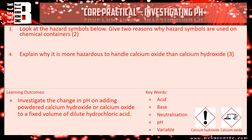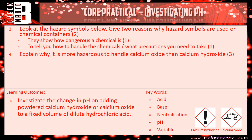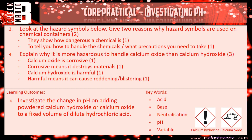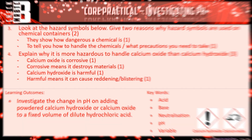Let's go through questions 3 and 4. Question 3 asks for two reasons why hazard symbols should be used on chemical containers. First, they show how dangerous a chemical is — they show you the warning signs. Second, they tell you how to handle the chemicals and what precautions you need to take, whether that should be safety goggles, a mask, gloves, and so on. Question 4: calcium oxide is corrosive — meaning it destroys materials — while calcium hydroxide is harmful, meaning it can cause reddening or blistering.